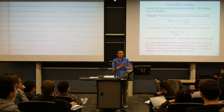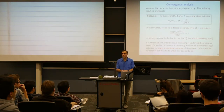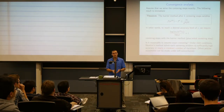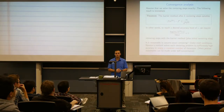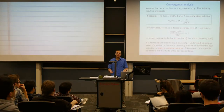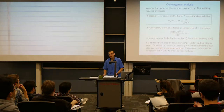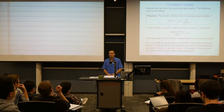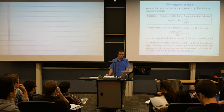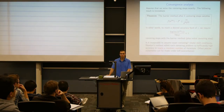The takeaway: Newton's method on an unconstrained problem achieves quadratic convergence, but interior point methods converge at a linear rate — O(log(1/ε)). We've sacrificed something by solving a sequence of problems, but we've greatly expanded the class of problems we can apply Newton's method to. Now we can handle any smooth inequality constraints.